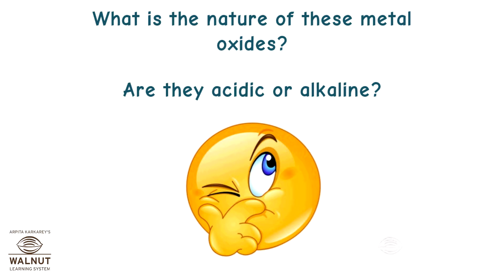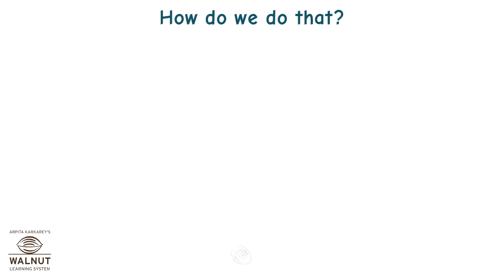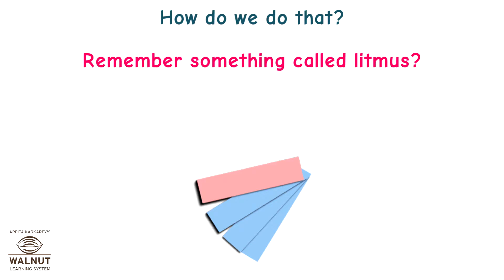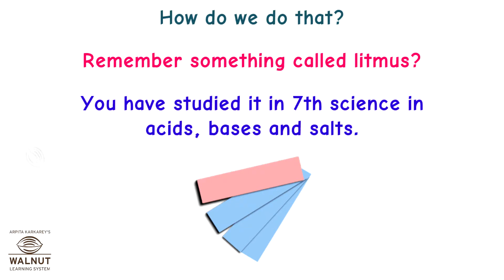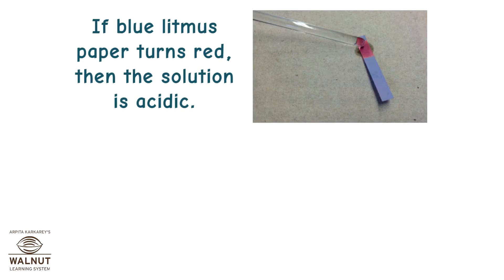What is the nature of these metal oxides — are they acidic or alkaline? We put these oxides in water and then check if the solution formed is acidic or alkaline. We use litmus paper, which we studied in seventh grade science in acids, bases and salts. Litmus paper is used to check if something is acidic or alkaline.